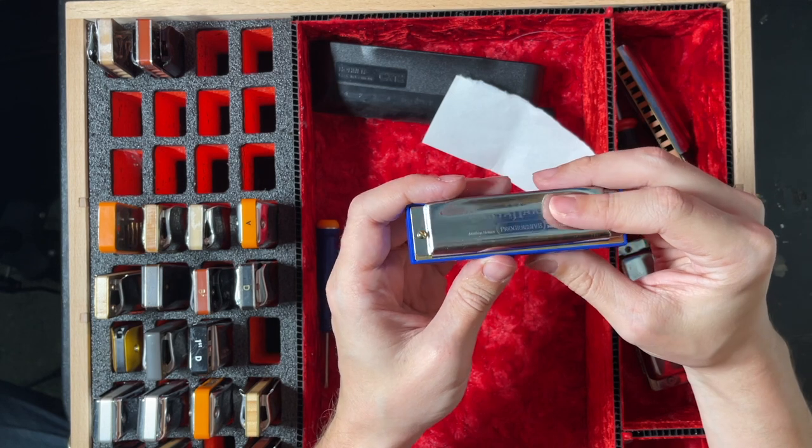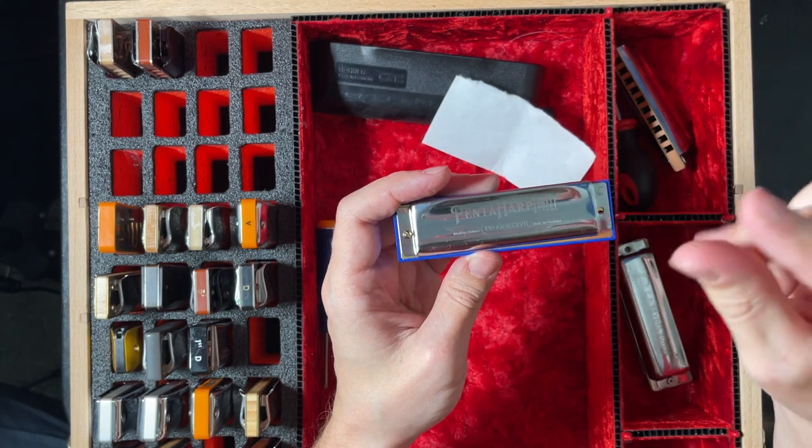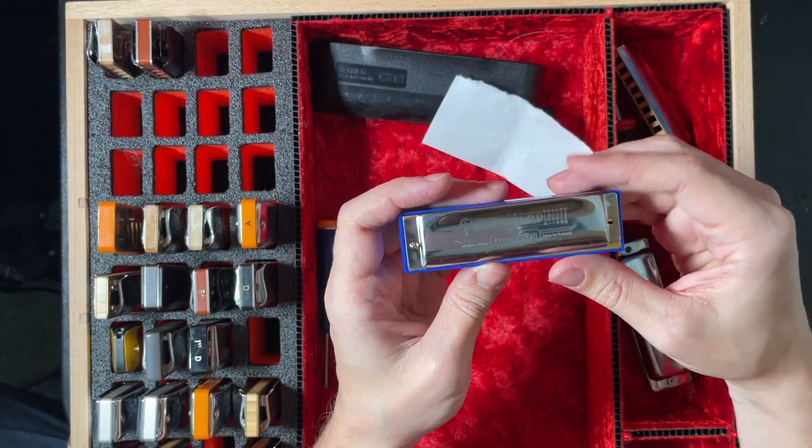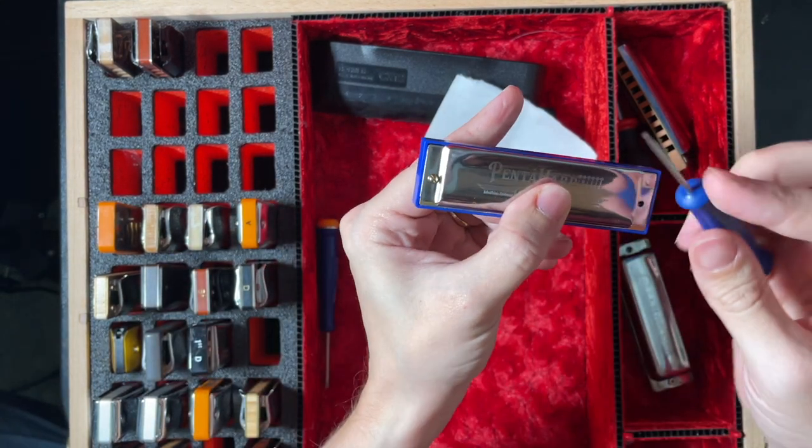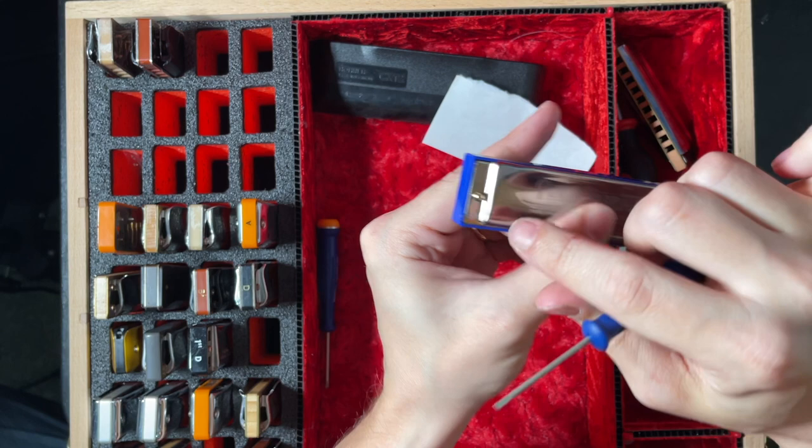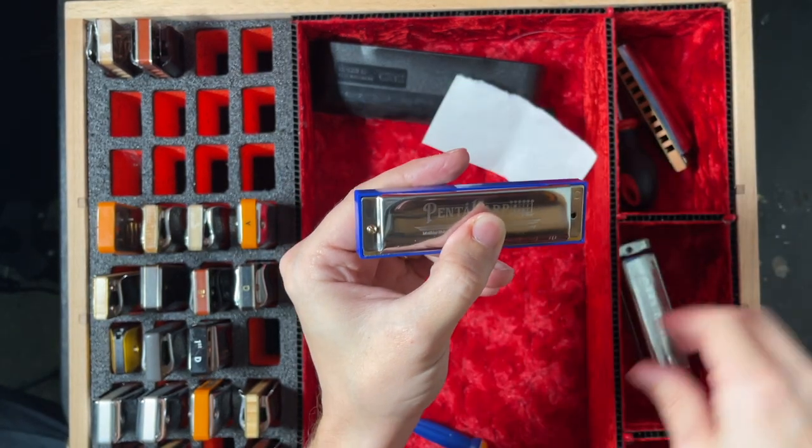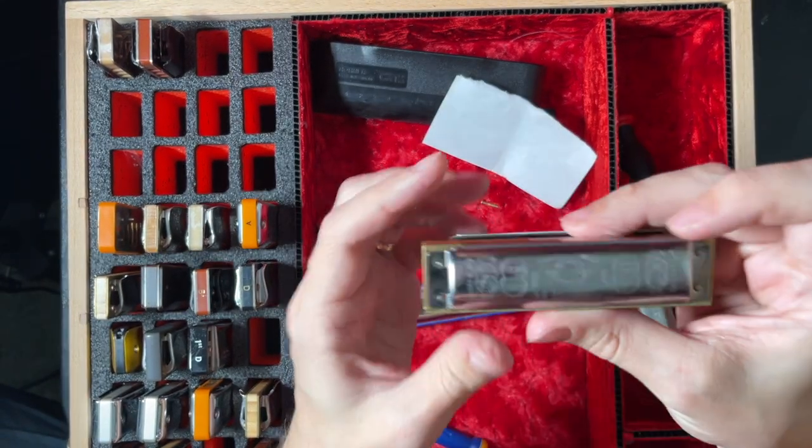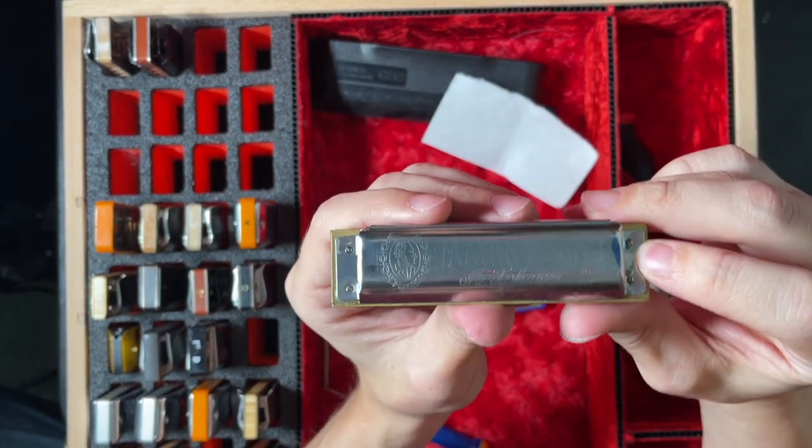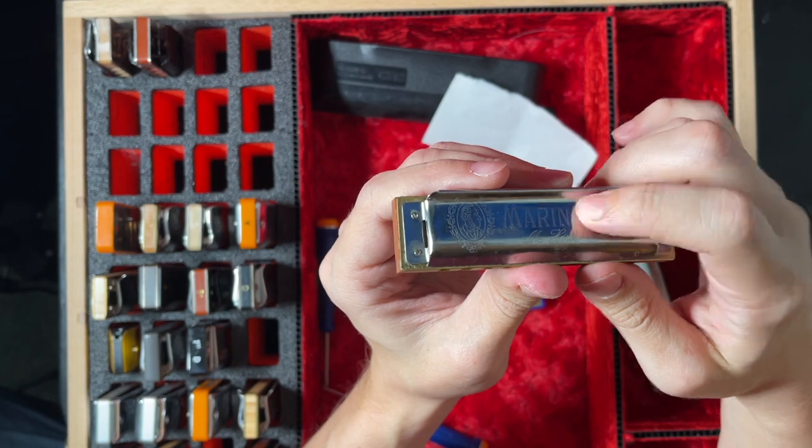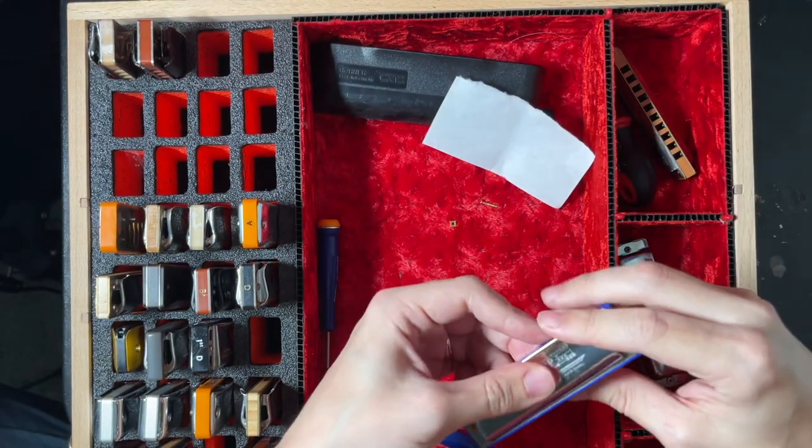Now this is a problem because the reeds have a little bit too big of a gap, and so we're going to do the process of gapping. Now you can see I've already taken a screw off and that's what we're going to do. We're going to take in this case a flathead screwdriver and take that little screw off right there.